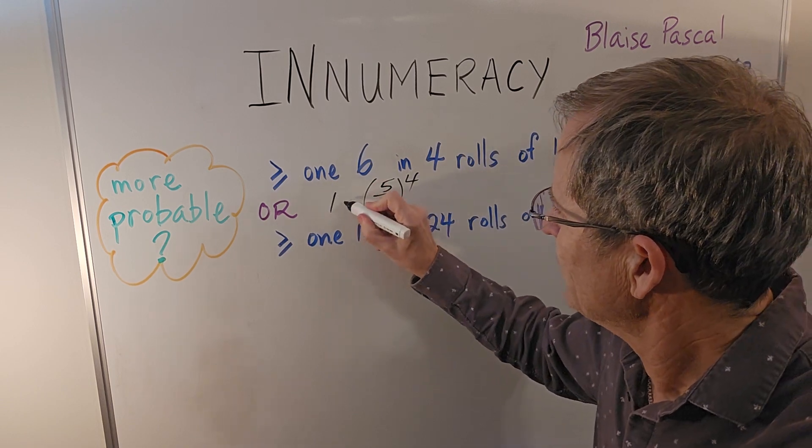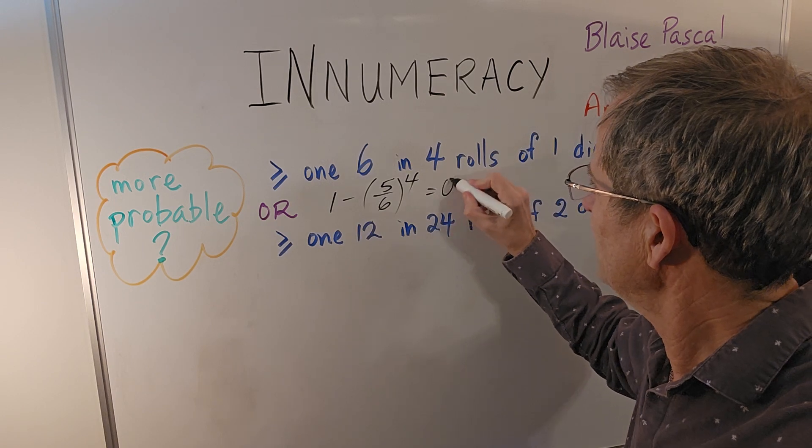So the probability of getting zero sixes is five out of six. Since there are four rolls, the probability of getting no sixes at all is five over six to the four, and then we subtract one from minus that to find out the odds of getting at least one six in four rolls of one die, which you can check turns out to be about 0.52.